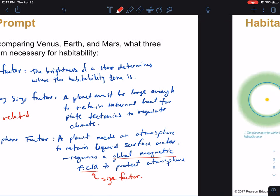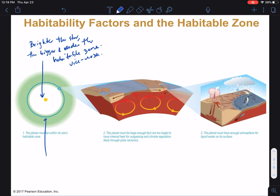All right. So, let's look at a diagram of these things. I'm a very visual-oriented person, and so these types of diagrams help me. So, we're thinking the brighter the star, the bigger and wider the habitable zone, and vice versa. That is to say, the size and the brightness of the star affects the habitable zone.